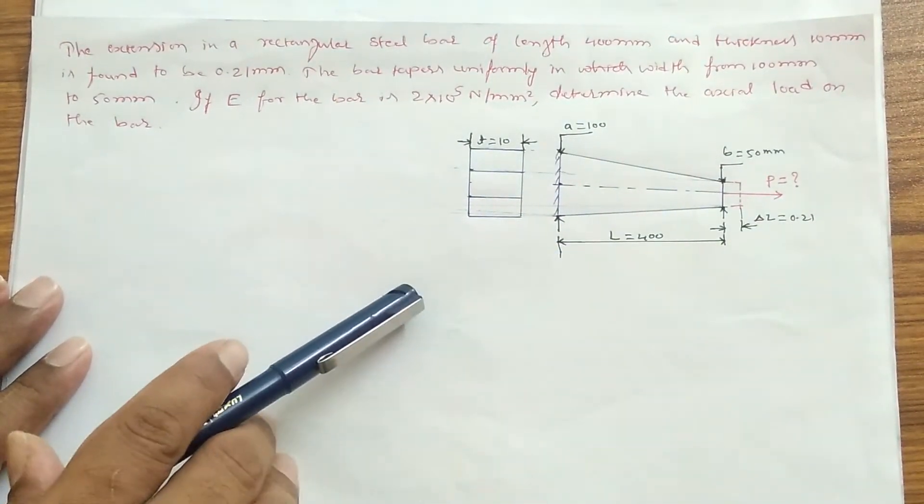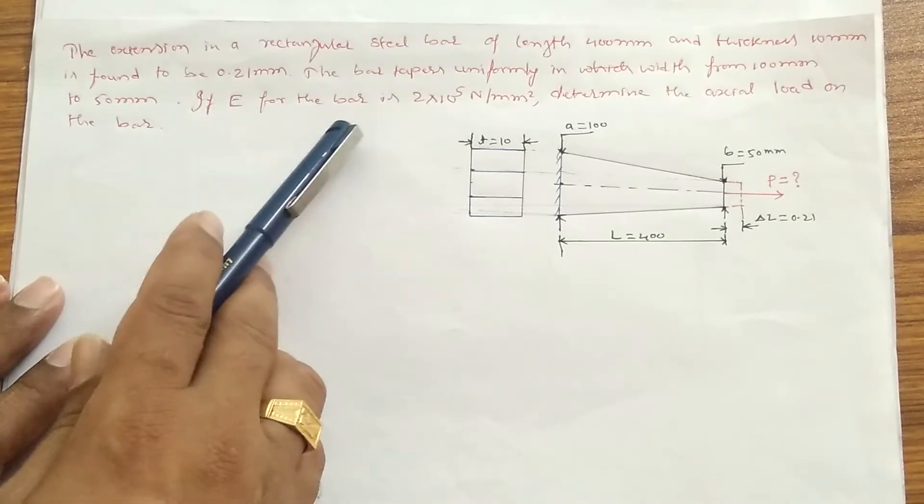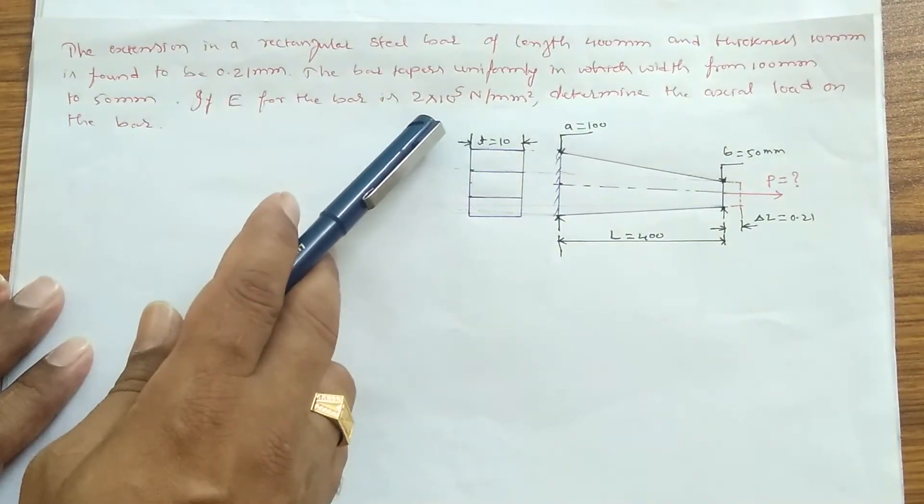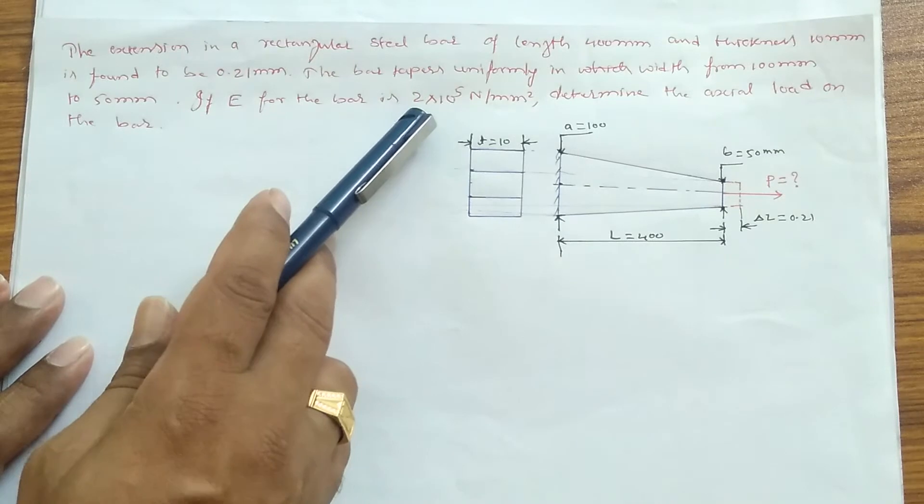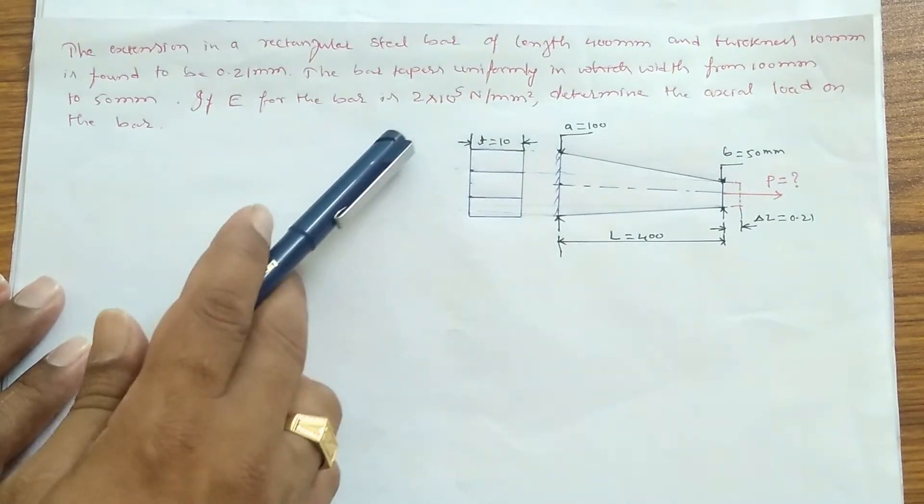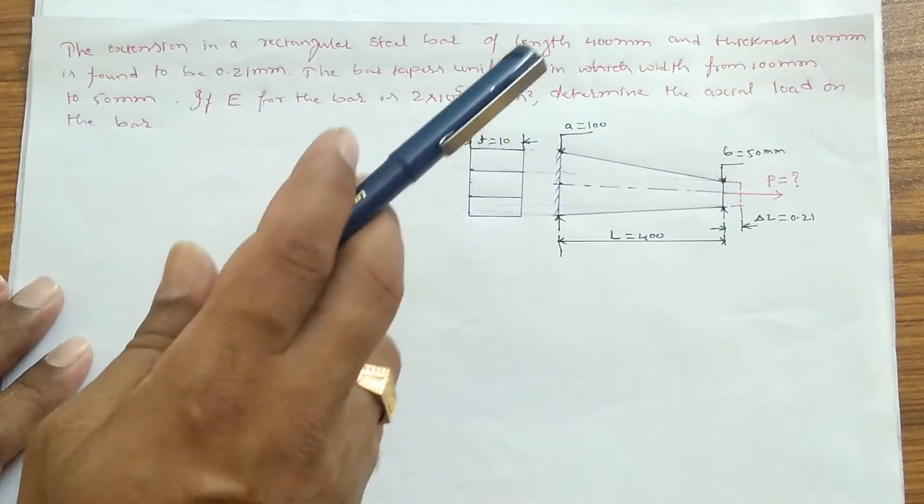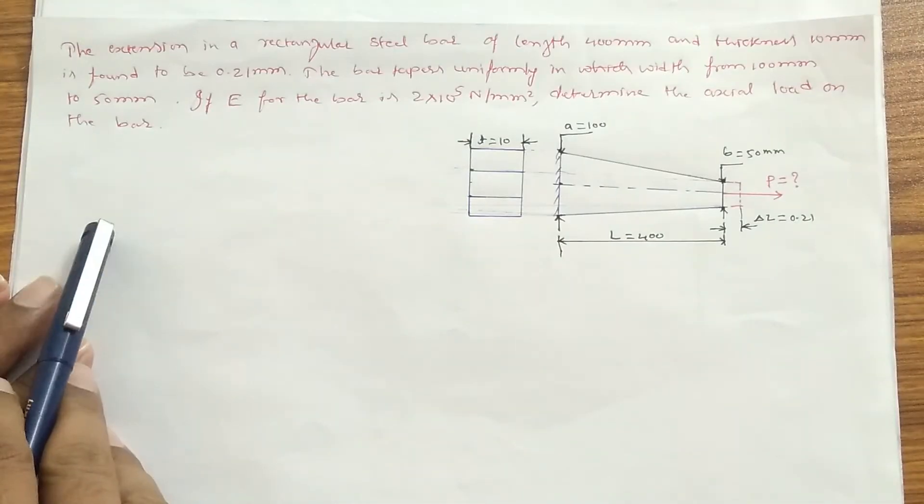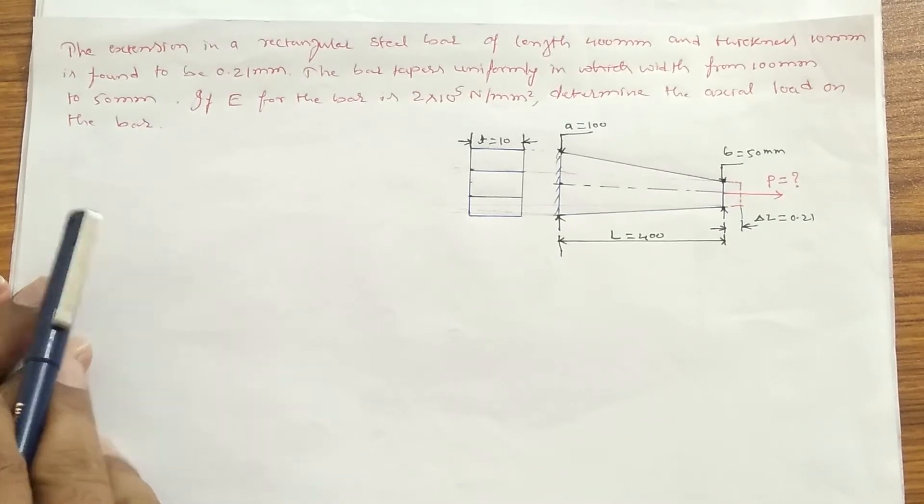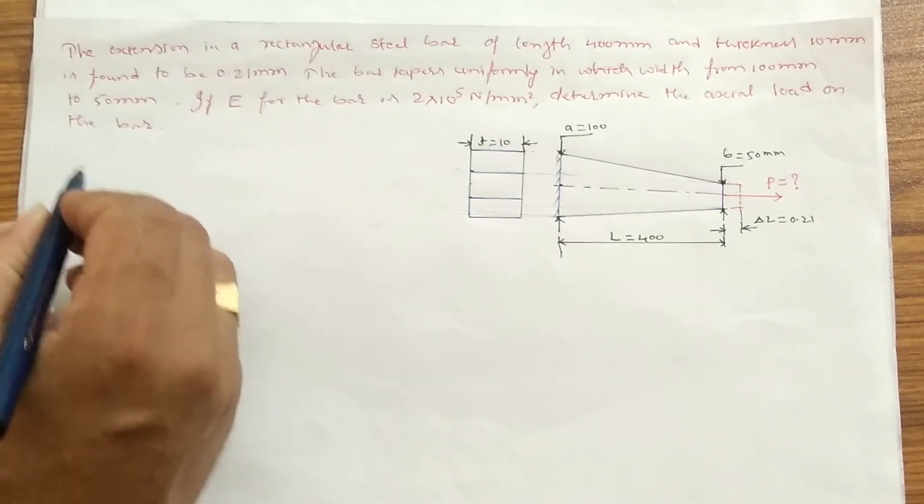And if E for the bore is 2 × 10^5 Newton per mm squared, so Young's modulus is given here. And determine the axial load on the bore—so this is what we need to find out. Now let's start the problem.